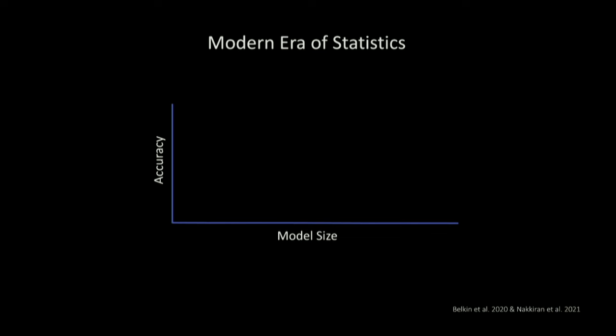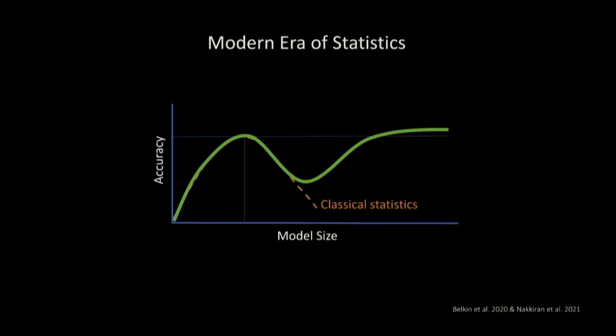I want to put this in perspective from a statistics and statistical learning viewpoint. On the x-axis we have model size and accuracy. Classical statistics told us that up to a certain point, increasing model size yields better accuracy, but then test accuracy — on data the model has never seen — would degrade. But deep learning shows us this is not true: after that point, if we keep increasing model size, accuracy starts going back up.